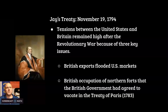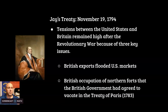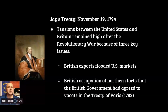In November 1794, tensions arose between the United States and Britain over three key issues. The first key issue is that British exports were flooding the United States economy and really tanking it. Cheap British goods were not good for the United States economy. Number two, the British still occupied military posts in the northwestern part of the United States.